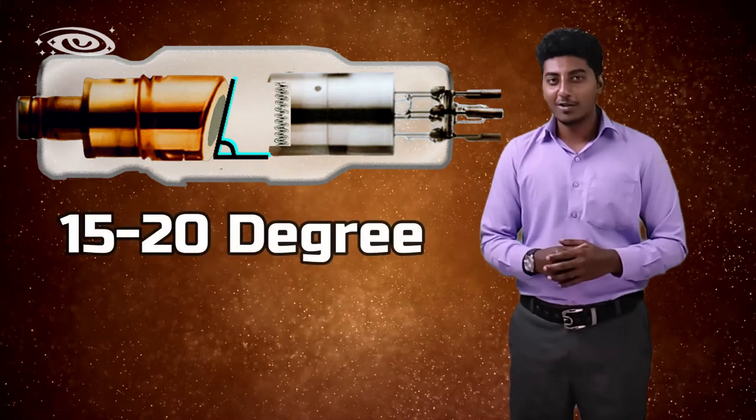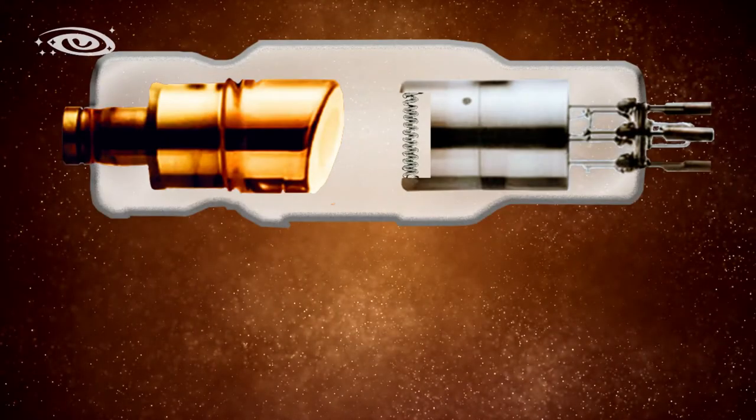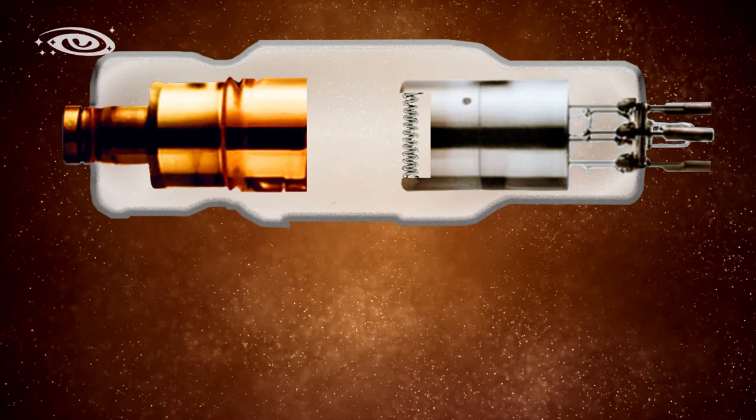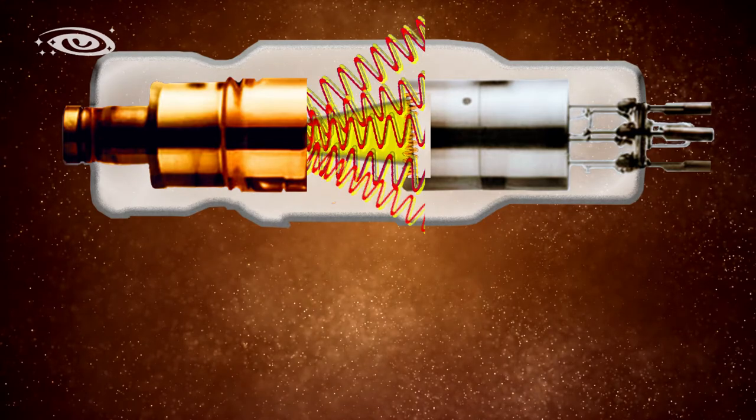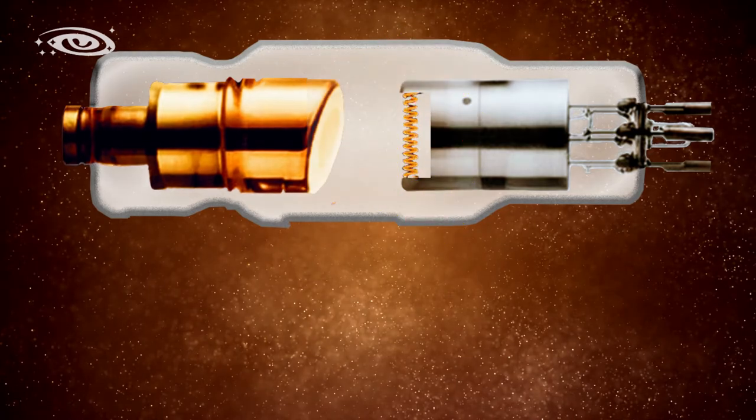The anode angle is usually 15 to 20 degrees in the stationary anode x-ray tube. The reason for the anode angle is to radiate the x-ray beam perpendicular to the high velocity electrons. If the anode is flat without angulation, the x-ray photons will radiate opposite to the cathode side, making them useless. To overcome this, an angle is given to the anode.